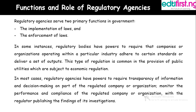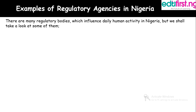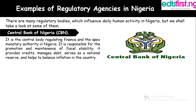There are so many regulatory agencies that are functional in Nigeria. But for the sake of this class, we shall look at a very few of them. The first is the Central Bank of Nigeria. The Central Bank of Nigeria is the body regulating finance and the apex monetary authority in Nigeria. It is responsible for the promotion and maintenance of fiscal stability. It provides credit, manages debts, serves as a national reserve, and helps to balance inflation in the economy.